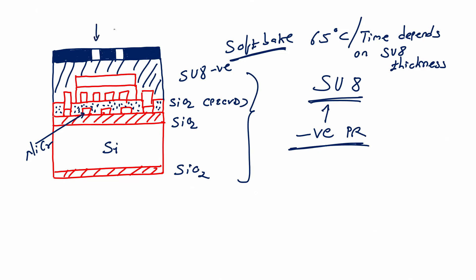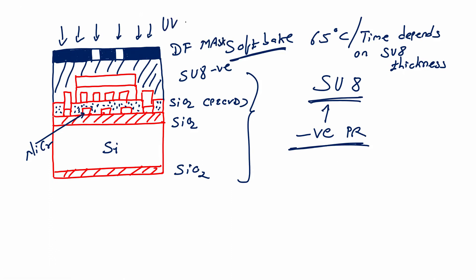At the two open regions, UV can pass through; the remaining area UV cannot pass through. After loading this dark field mask, we go for UV exposure. When we do the UV exposure, the area which is not exposed will become weaker because SU8 is a negative photoresist, and the area which is exposed will become stronger.